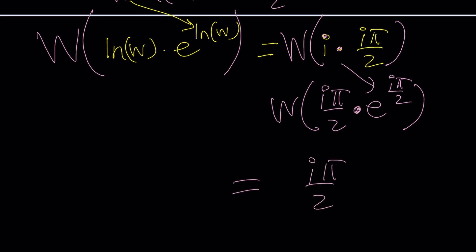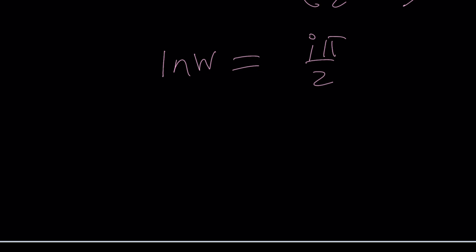The left-hand side, when I apply Lambert, is going to be ln w. Beautiful. And then, we are going to do e to the power, so w is going to be e to the power iπ over 2, which is i.